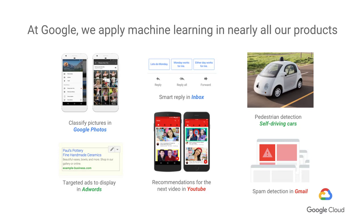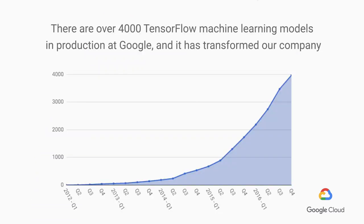We keep track of how much we use machine learning — deep learning in particular — and over the last few years, we have produced over 4,000 TensorFlow machine learning models. You heard that right: 4,000 TensorFlow machine learning models in production at Google. In 2012, that number was near zero, and by the end of 2016, we were crossing 4,000.